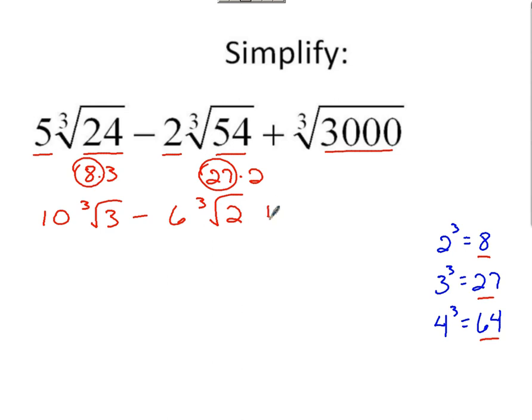On the last one, we're adding on. Perfect cube that goes into 3,000, that'd be like 1,000, right? Can you take the cube root of 1,000? What's the cube root of 1,000? 10. So if you take the cube root of 1,000, which is 10, 10 pops out. There's nothing in front, so we're technically multiplying to 1 there. You've got 10 cube root of 3.